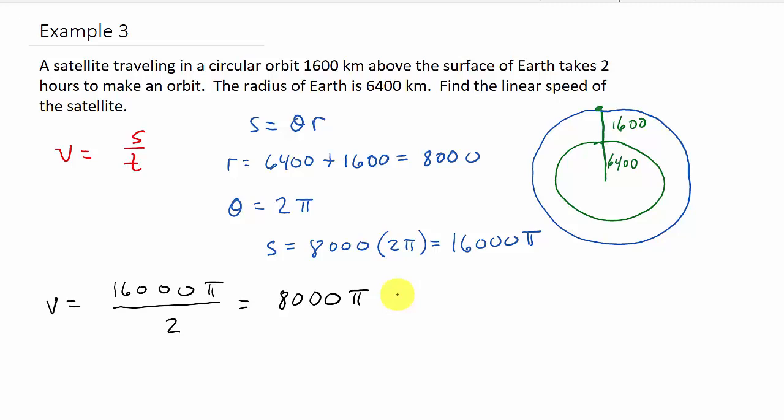Now, what's the units? Well, they didn't tell us what units to put it in. So what we'll do is we'll look at this. This is in kilometers. Our time is in hours. So we'll just put kilometers per hour. And if you wanted to, you could do 8,000 times pi. And you could put 25,132.74 kilometers per hour.